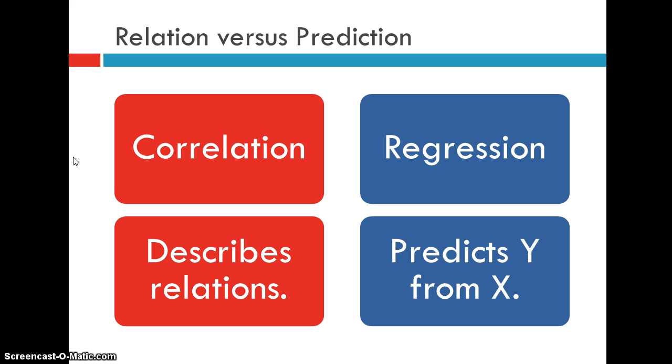When we look at correlation, what we're talking about is describing the relationship between two variables, whereas regression actually uses one variable to predict the other. So what do we know from x to predict y? So correlation, you don't really have a particular dependent variable.